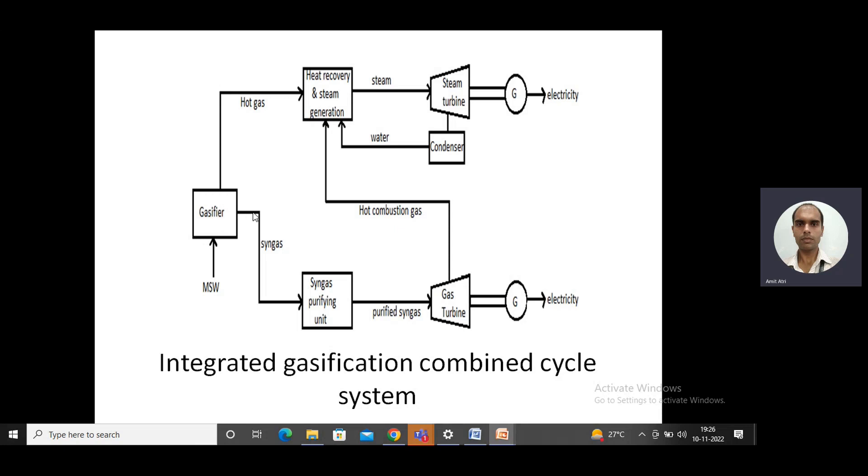Then the syngas is produced as a result of gasification and this syngas is further purified and supplied to the gas turbine. We are getting this fuel of syngas, it provides energy and then this turbine is coupled with the generator and through the generator we are getting electricity.